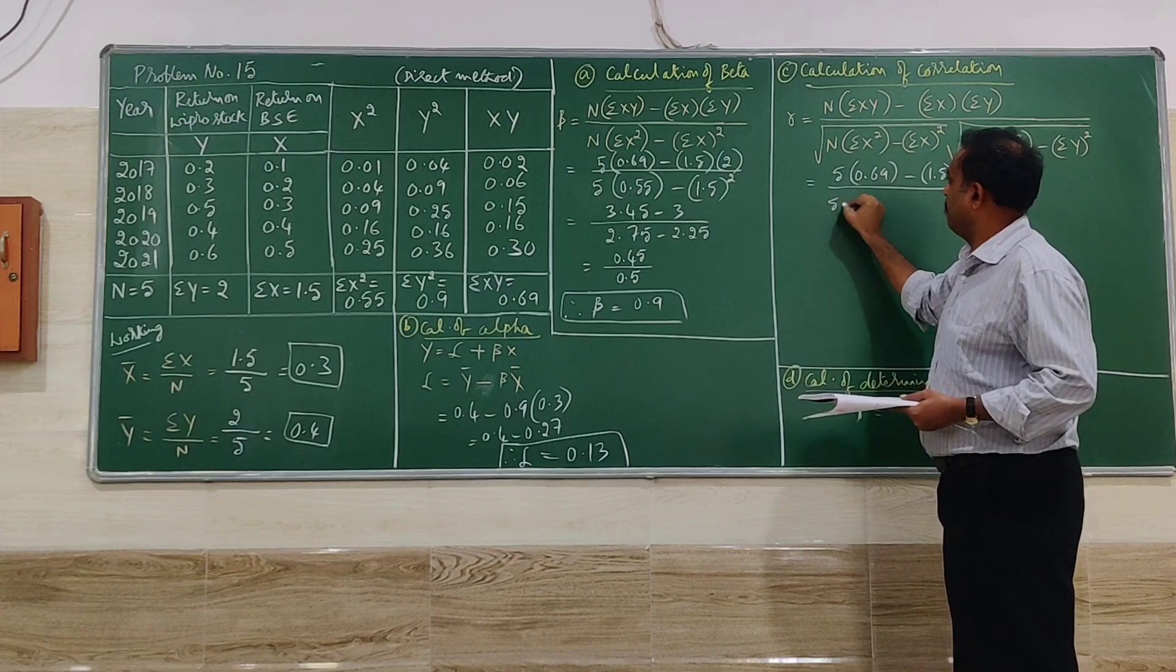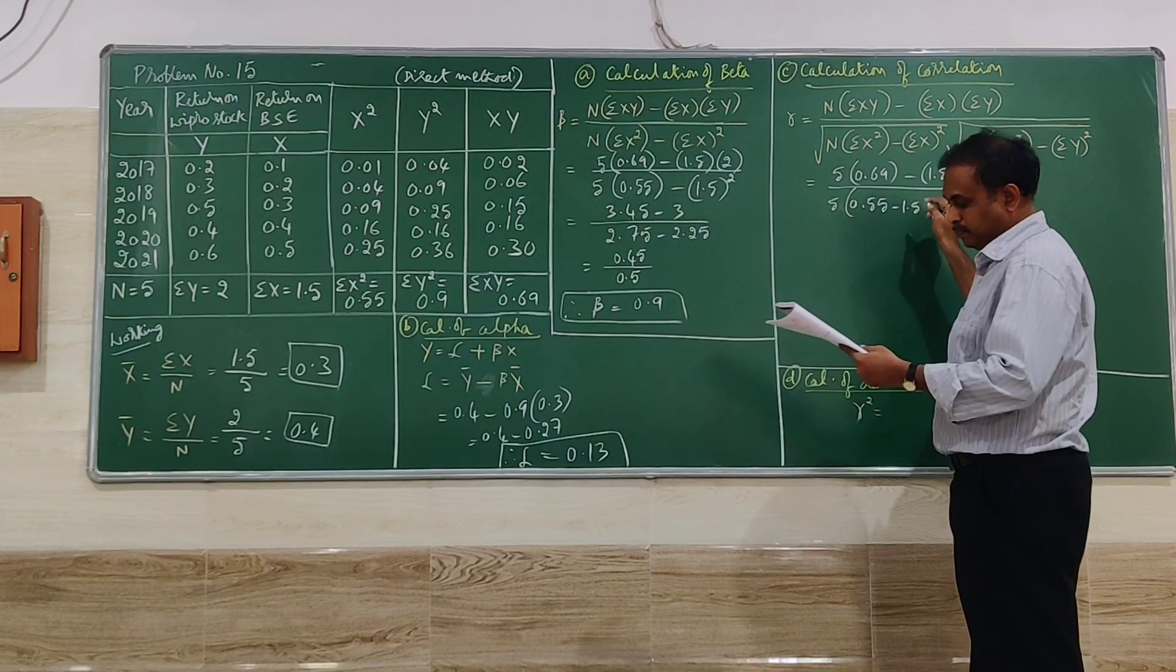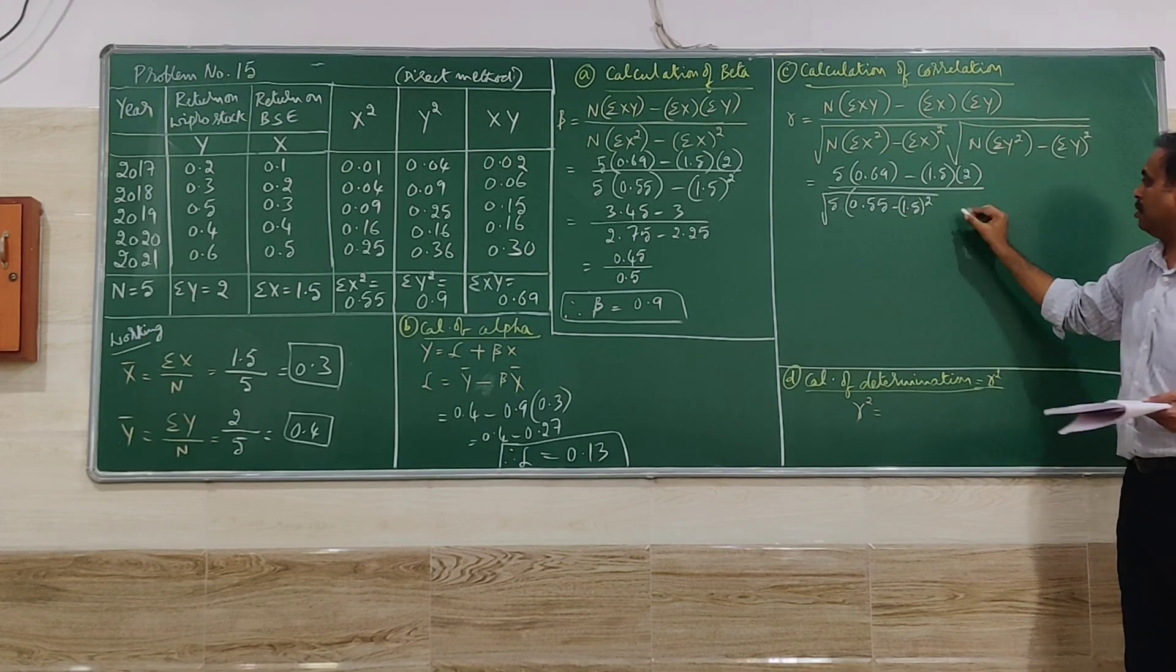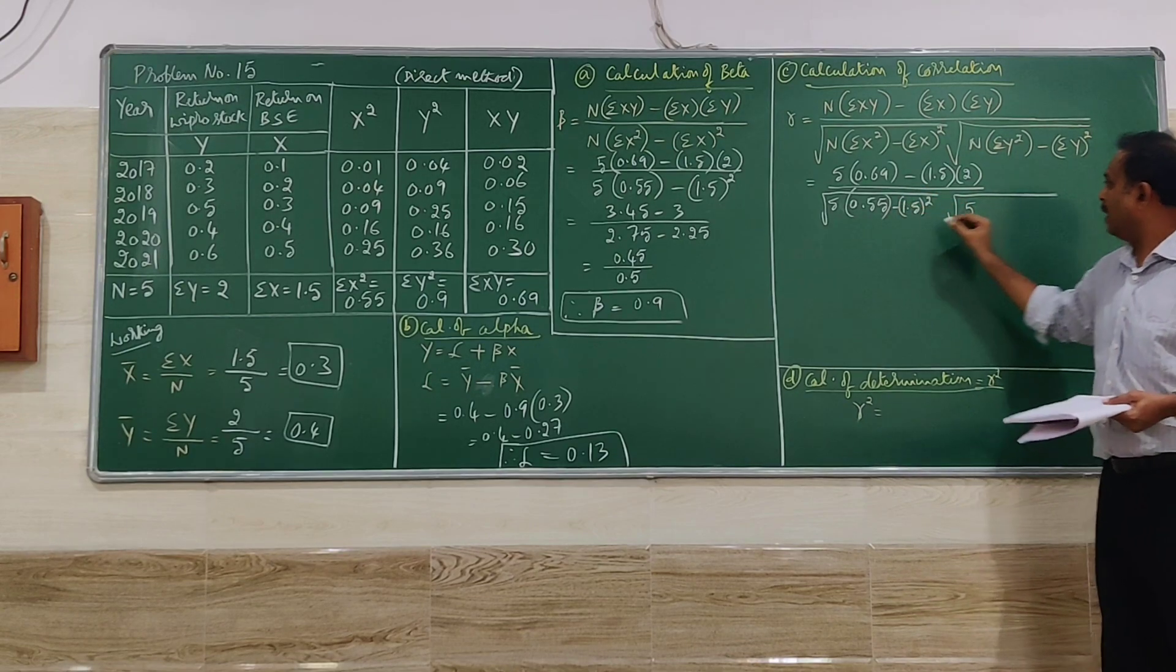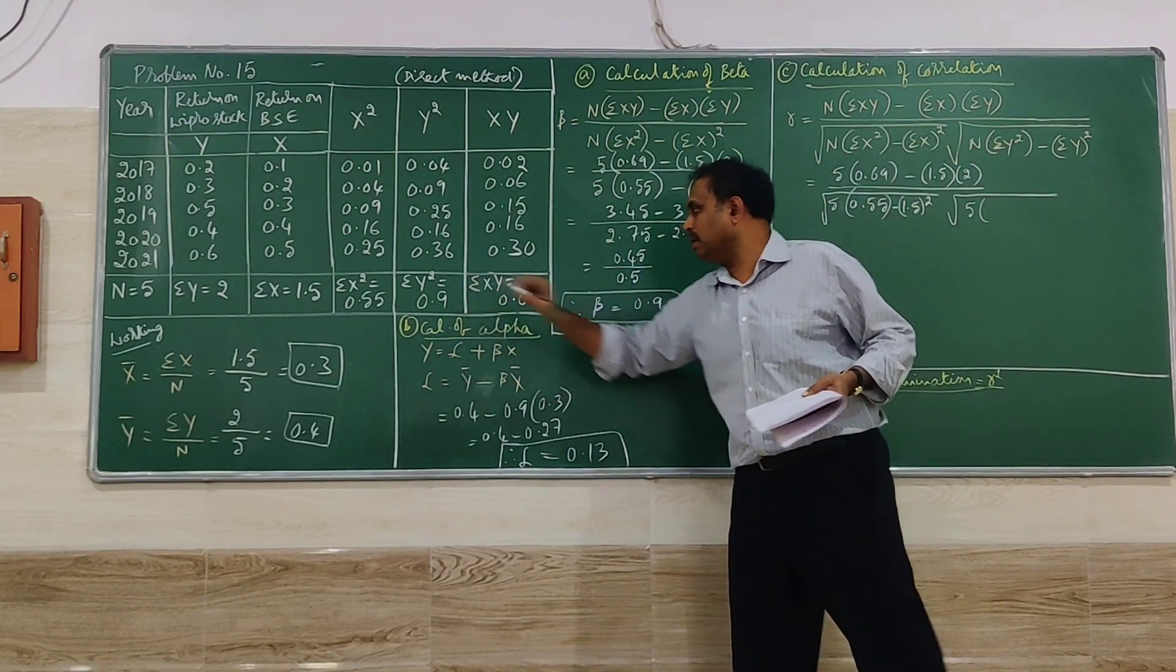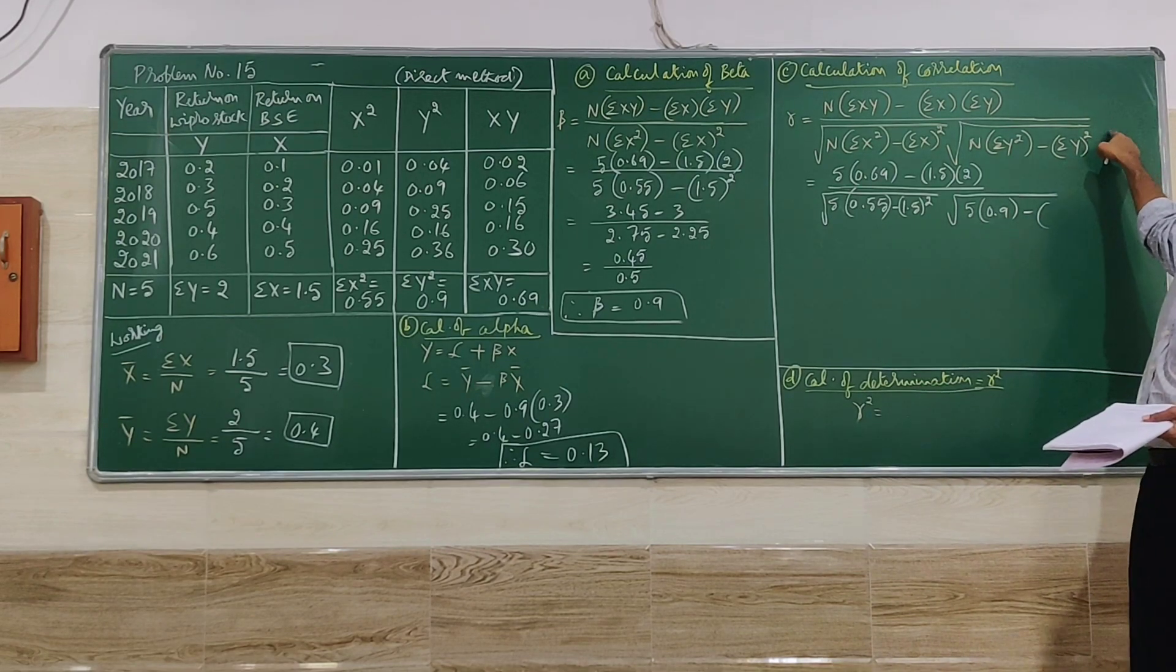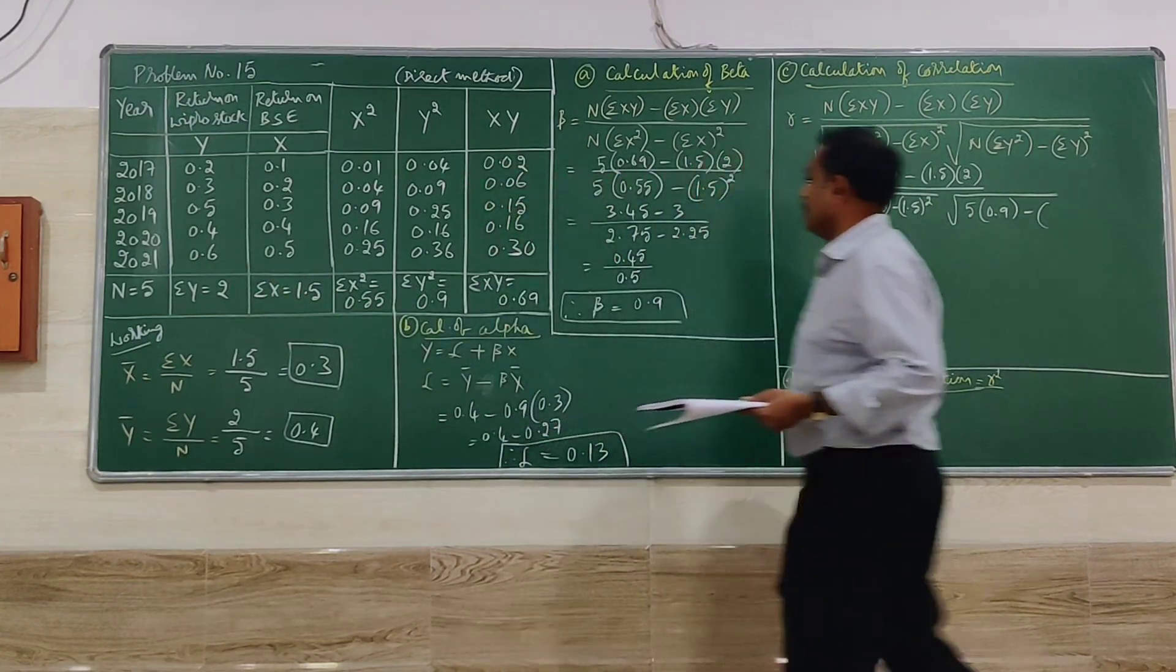Denominator. 0.9 minus summation Y whole square. Summation Y square 0.9 minus summation Y whole square. Summation Y is 2, so 2 square.